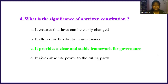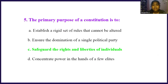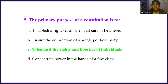The primary purpose of a constitution is to: Option A, establish a rigid set of rules that cannot be altered. Option B, enjoy the domination of a single political party. Option C, safeguard the rights and liberties of individuals. Option D, concentrate power in the hands of a few. The right answer is option C, safeguard the rights and liberties of individuals.